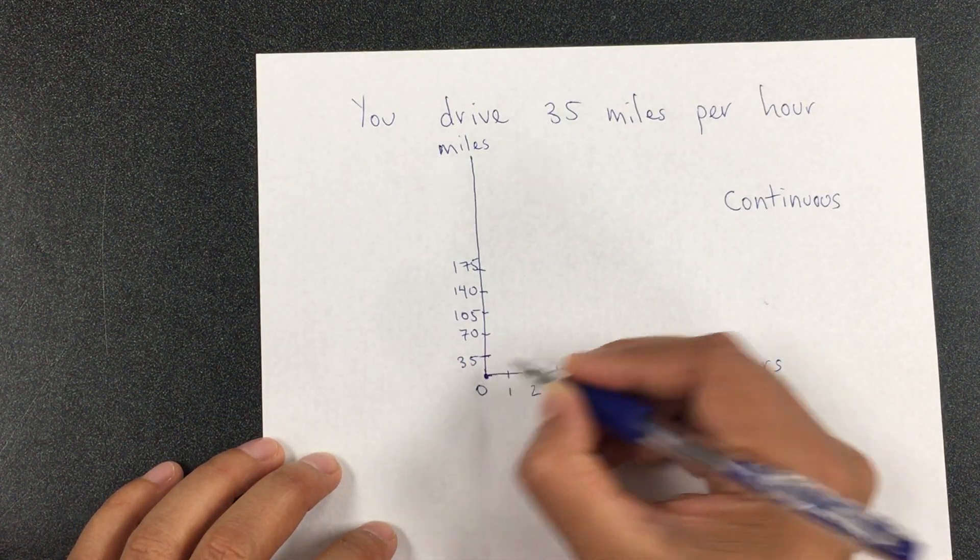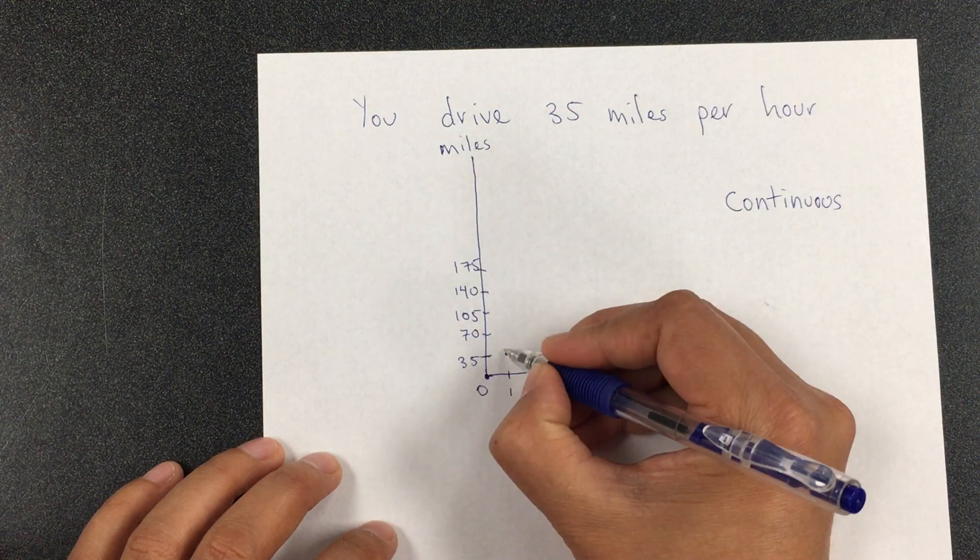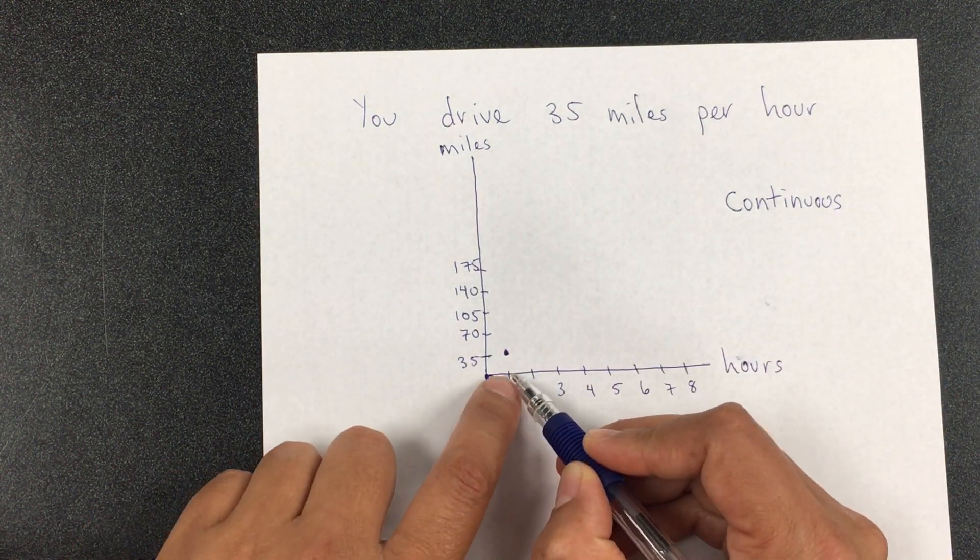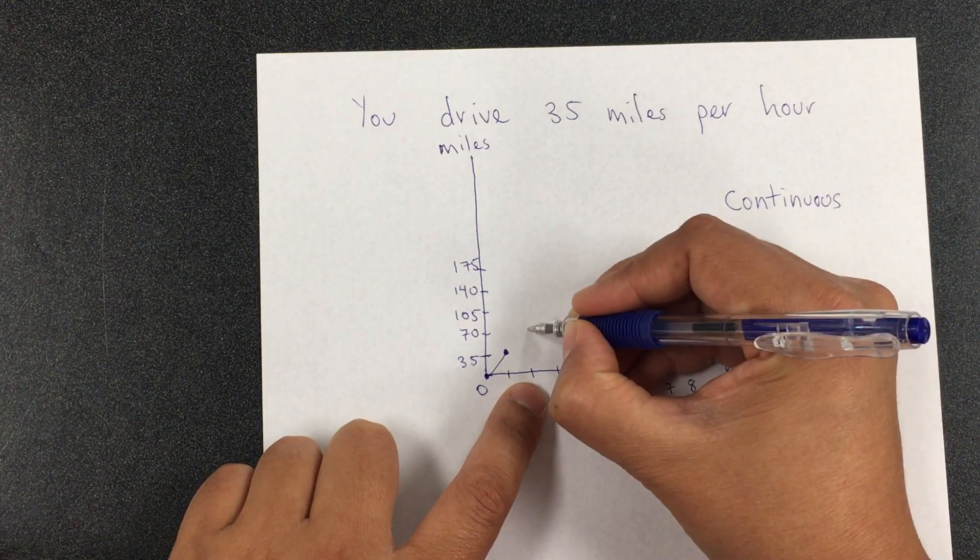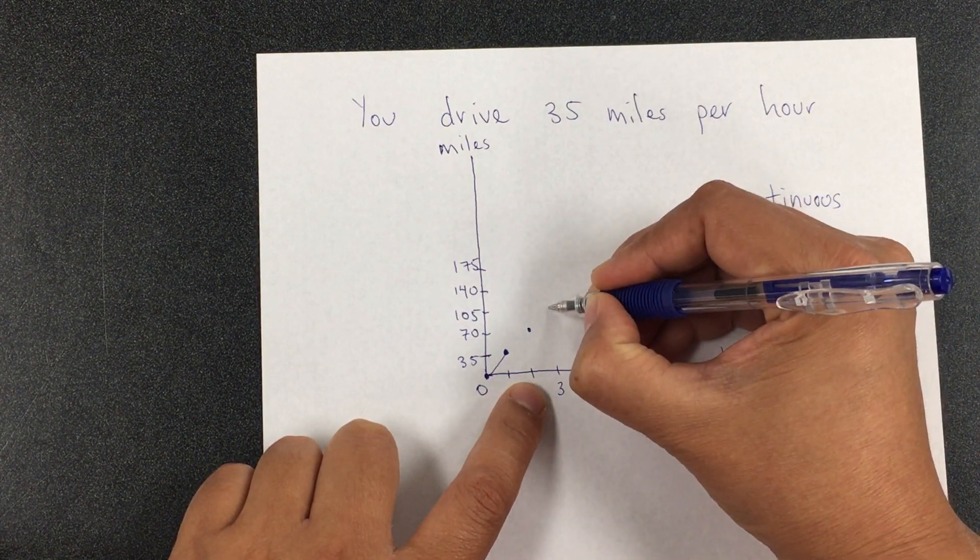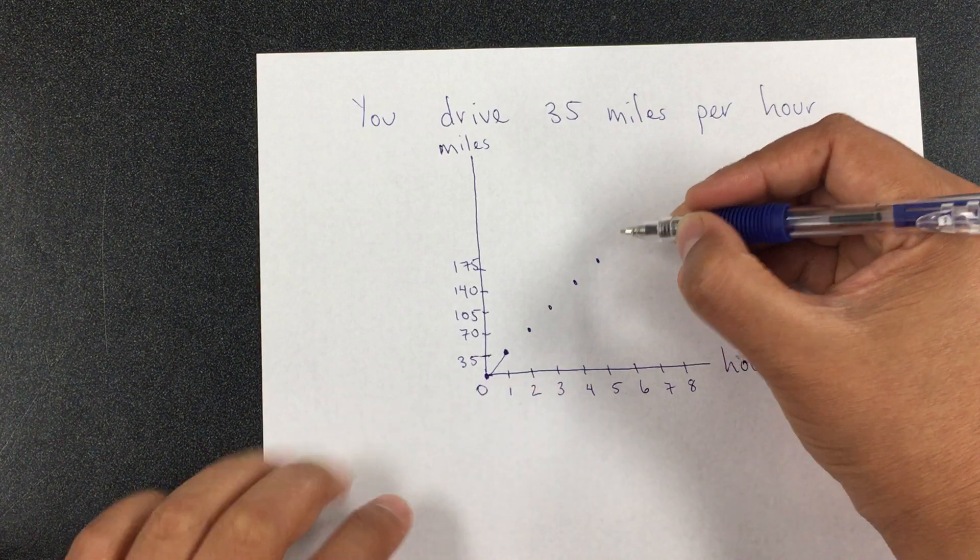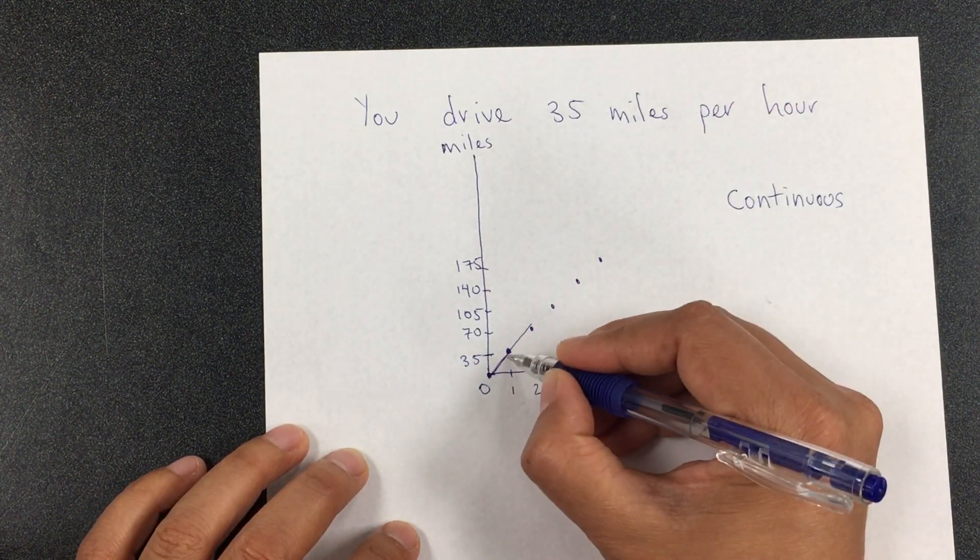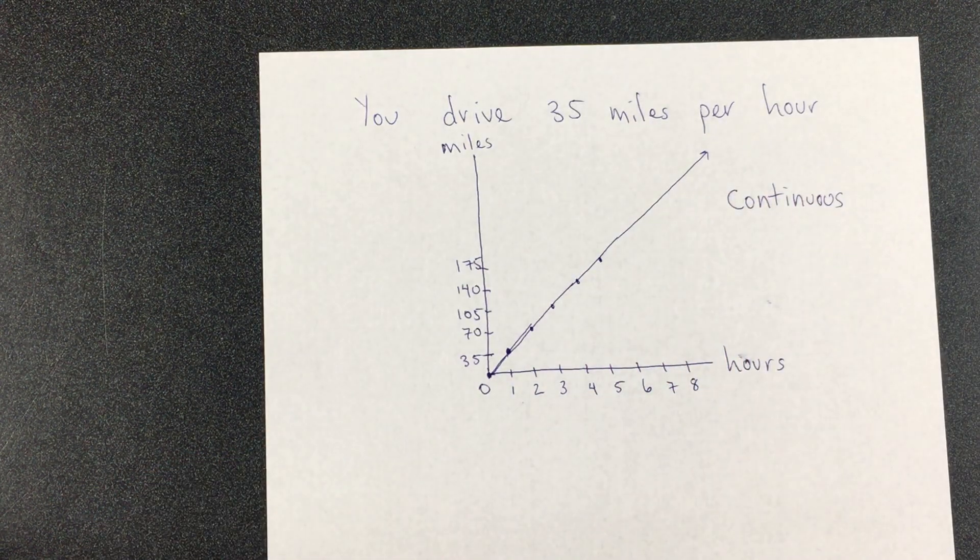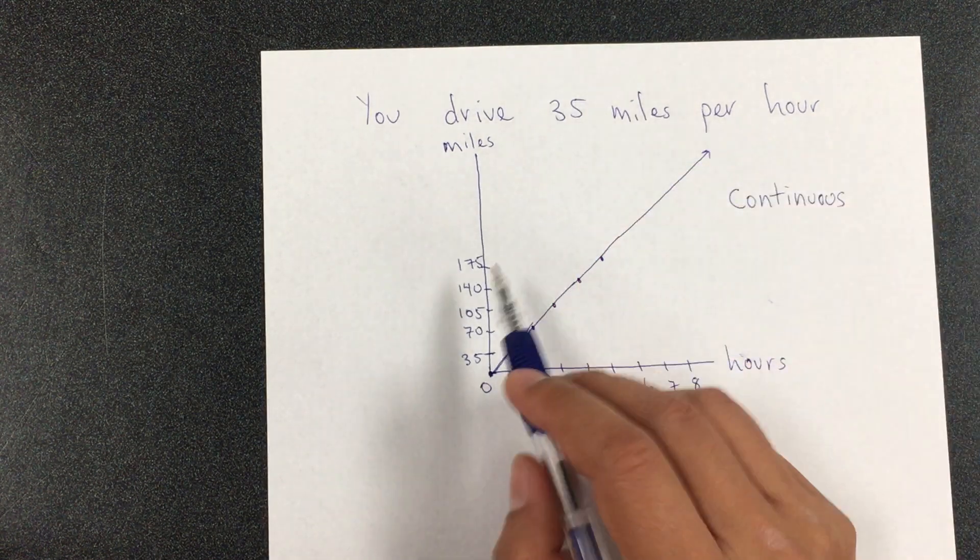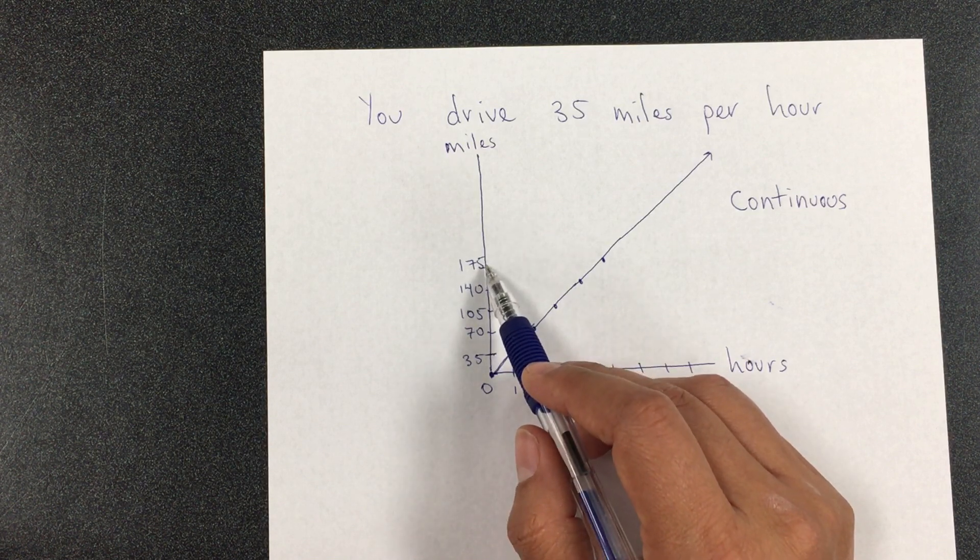The reason is because you're going to continue driving, so you draw a line through the points. You start at home, 0 miles at 0 minutes. After 1 hour, you have driven 35 miles. But you didn't automatically, after 1 hour, appear there. You were driving the 35 miles. After 2 hours, it's 70. After 3 hours, it's 105. After 4 hours, it's 140 miles. After 5, it's 175. And you know that 6 hours is going to be at 210.